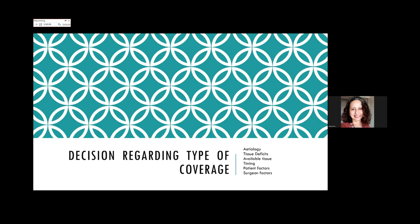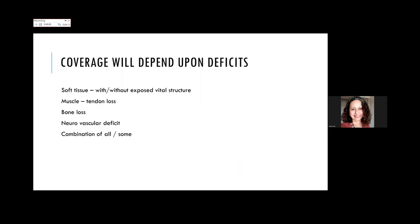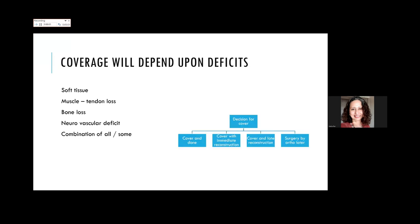Since we have to talk about coverage, we need to decide what type of coverage to give. First, assess the defect: the simplest is a soft tissue defect with no exposed vital structure—most of these can be managed with a skin graft. If there is an exposed but viable vital structure, you need soft tissue cover. Then there may be muscle, tendon, or bone loss, or a neurovascular deficit, or a combination of all of them.